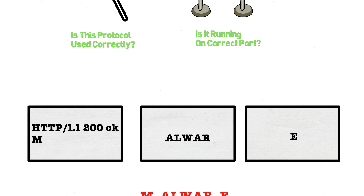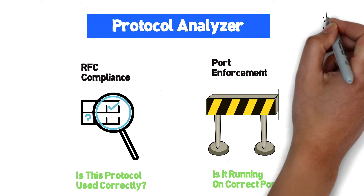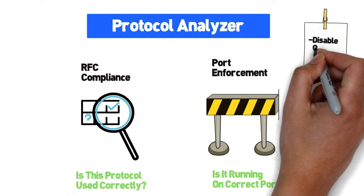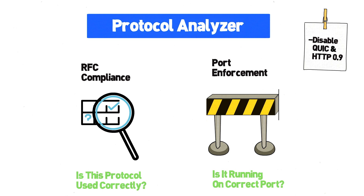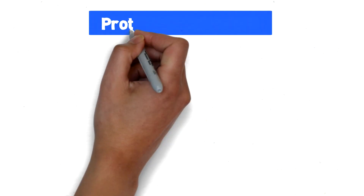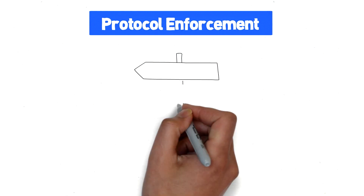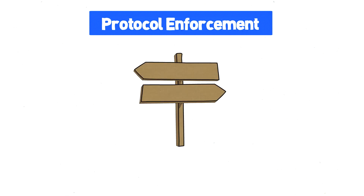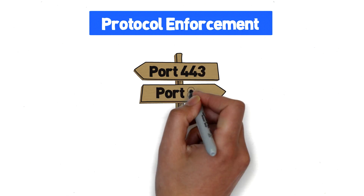Protocol enforcement should catch non-RFC compliant protocols and block or alert on them. While we're on the topic of protocols, if you have no need for QUIC or older HTTP versions, disable them altogether. QUIC is an experimental protocol by Google that is typically not scanned by modern security devices and therefore a viable mechanism for attackers to evade detection. Like protocol analyzer, protocol enforcement is usually a component of a layer 7 firewall and is intended to make sure that common protocols are running over the standard ports. On most vendors this option comes disabled by default so as to not cause problems in networks where applications may be running on non-standard ports.